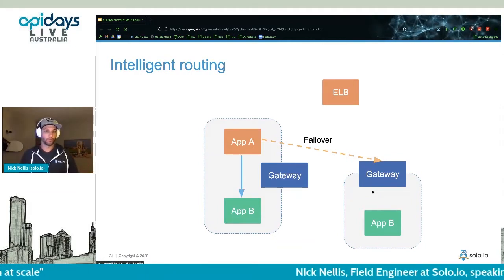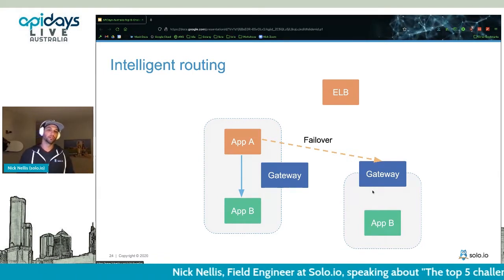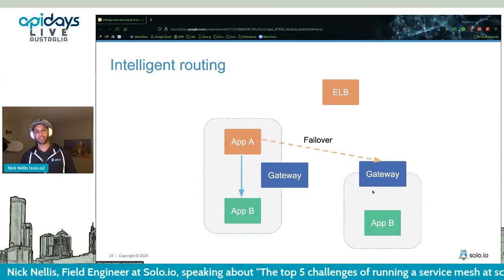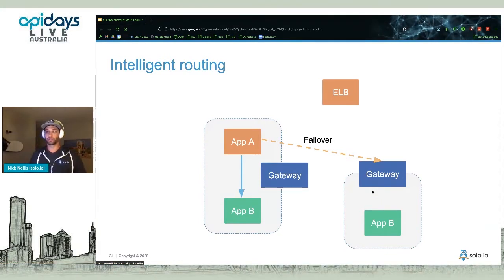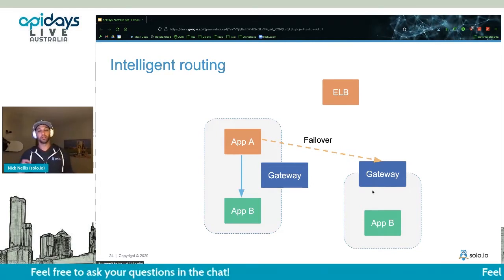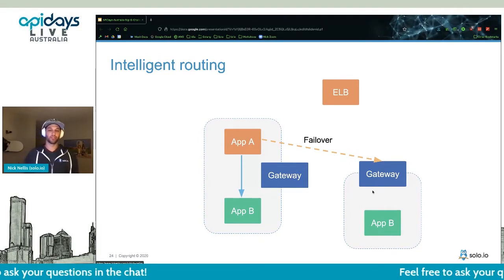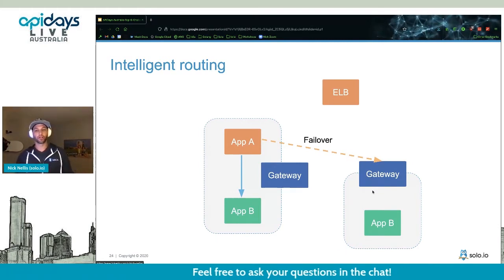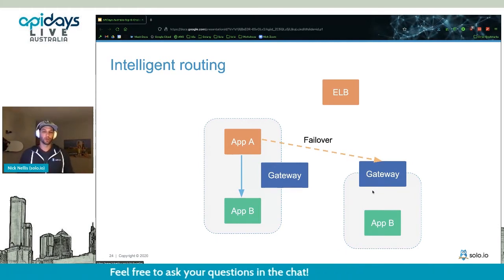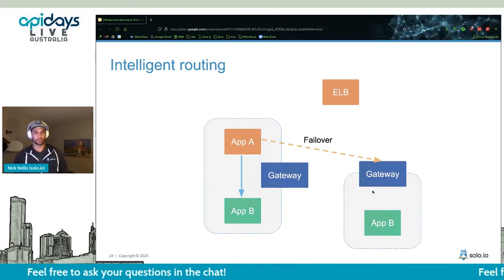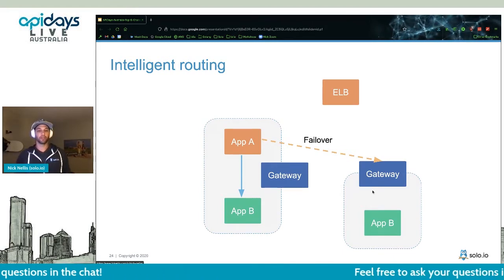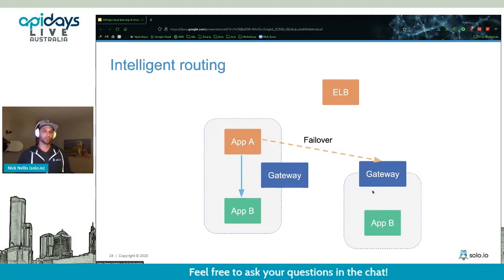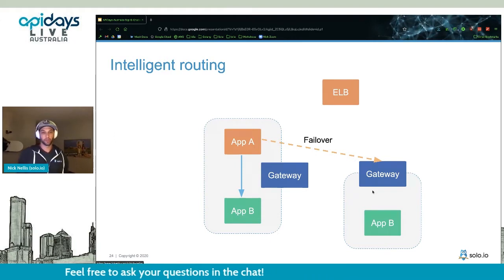What we can do with service mesh is be more intelligent about how that routing occurs — have application A call application B directly because it knows it's the closest one. But in the case that application B is not available or healthy, we should still be able to fail over and call the other application B in another cluster. We're offering the same high-availability features but doing it more intelligently, which actually improves your resiliency and routing.